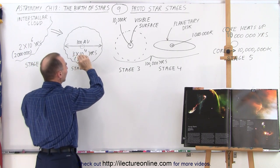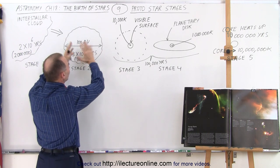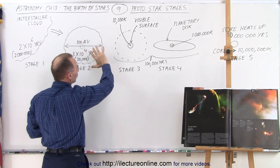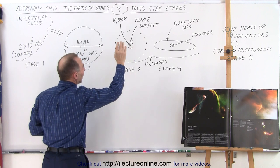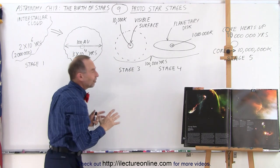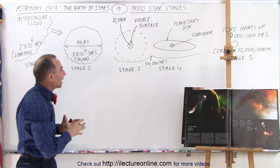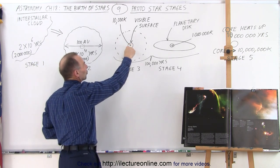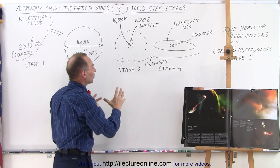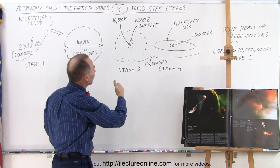Eventually, what will happen is that the emerging star begins to radiate in such a way that it starts to break through the cloud surrounding it and eventually the surface becomes visible, and that's when we call it stage three. The temperature at the center of this emerging star is approximately 10,000 Kelvin.